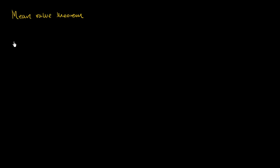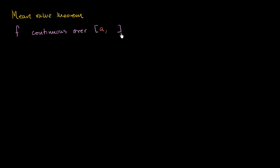So let's just think about some function f. We know a few things about this function. We know that it is continuous over the closed interval between x equals a and x is equal to b. When we put these brackets here, that just means closed interval — we're including the points a and b. Continuous just means we don't have any gaps or jumps in the function over this closed interval.